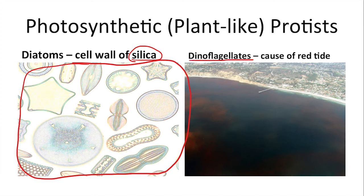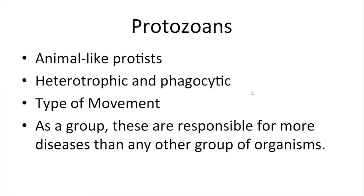Dinoflagellates, as pictured here, are associated with red tide, which can be dangerous to sea life. When there is an overbloom of these organisms, they produce toxins that are harmful to fish and other sea life. That concludes our plant-like or photosynthetic protists — that was group one.